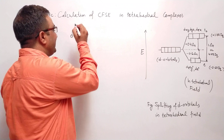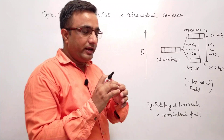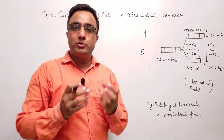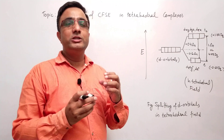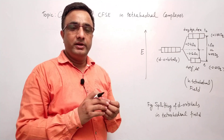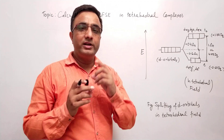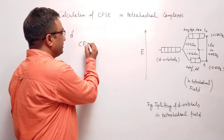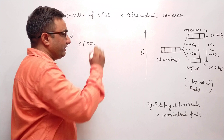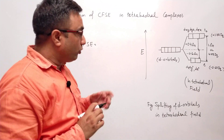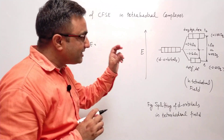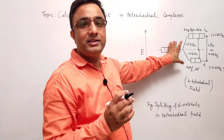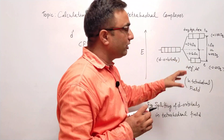Suppose for D1 electronic configuration — in a complex where tetrahedral geometry is present and one electron is present in the D1 system. One electron is present in the D orbitals. How will you calculate CFSE? We know the stabilization factor. This is the crystal field splitting energy level diagram for tetrahedral complexes.